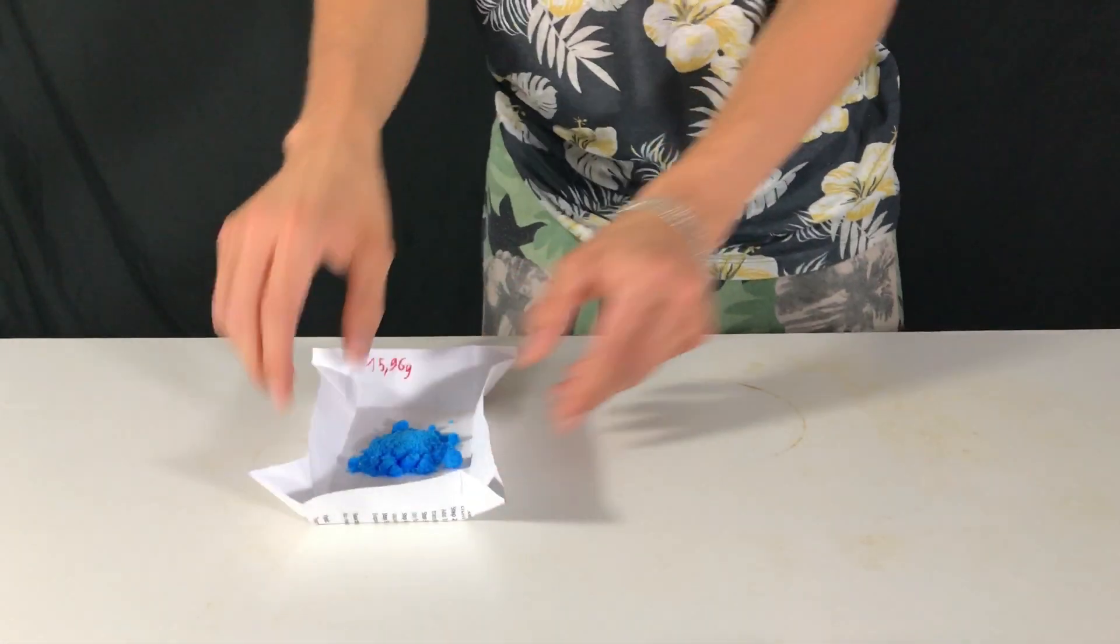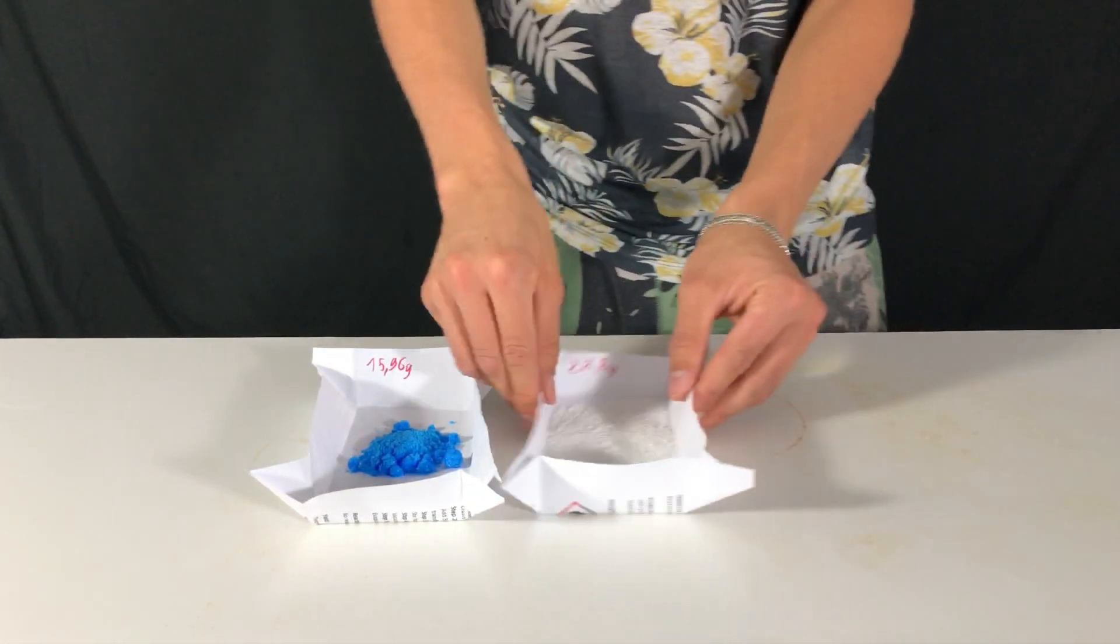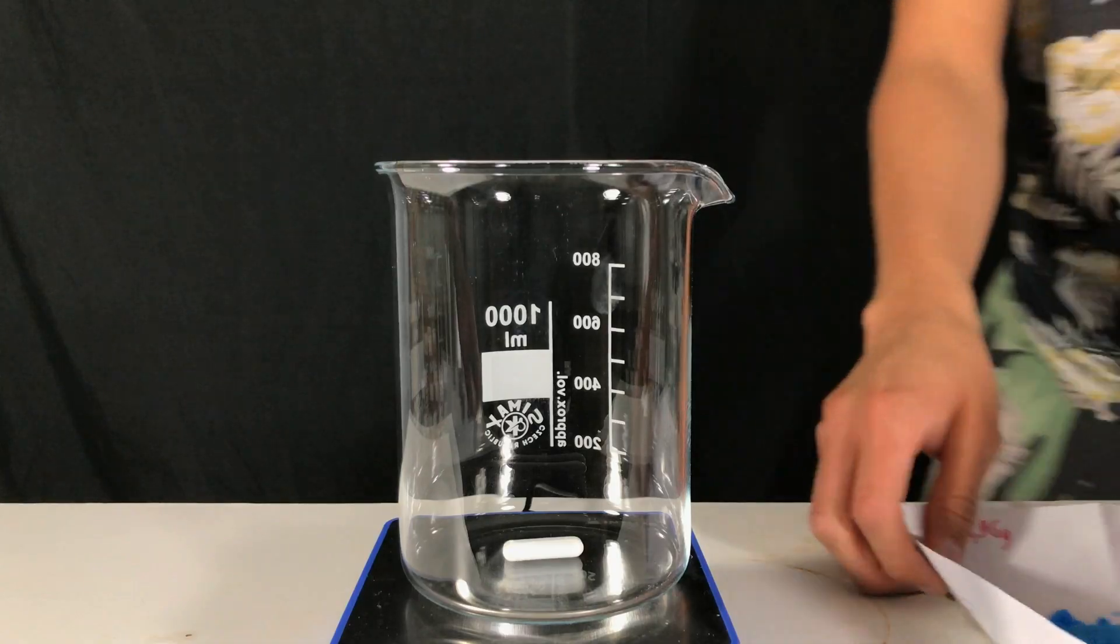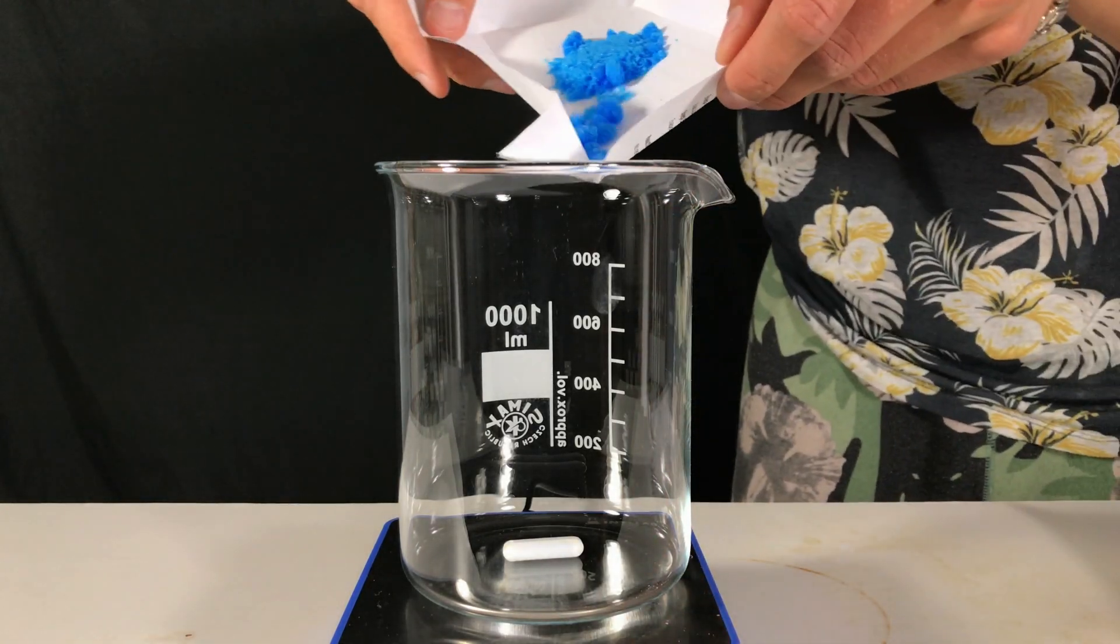15.9 grams of copper sulfate and 28.82 grams of sodium benzoate were weighed out in advance. The copper sulfate was then dumped into a beaker.